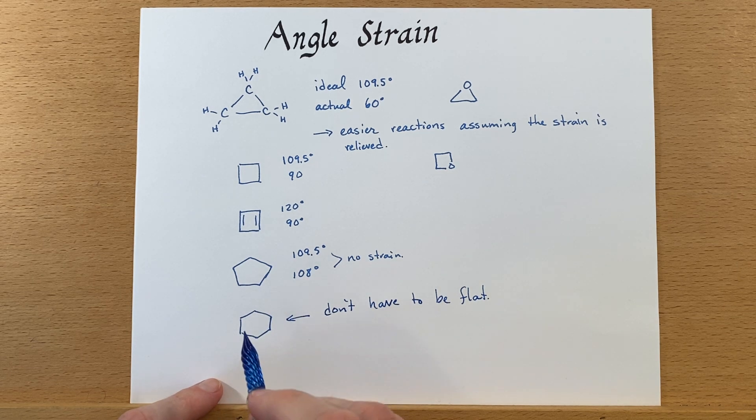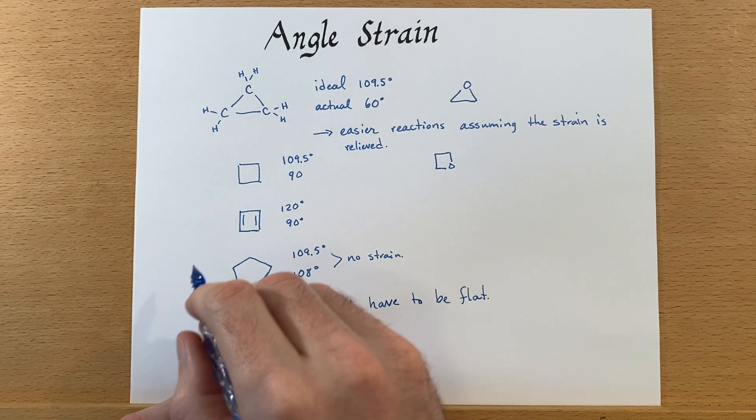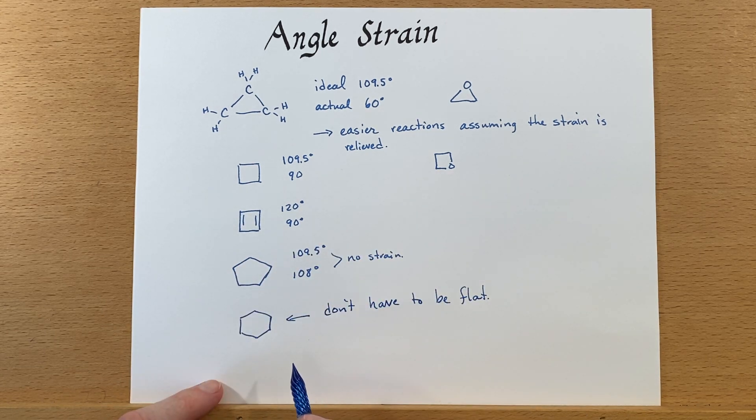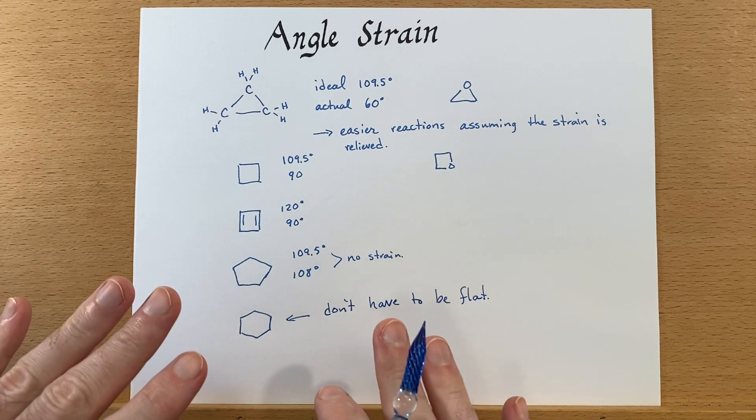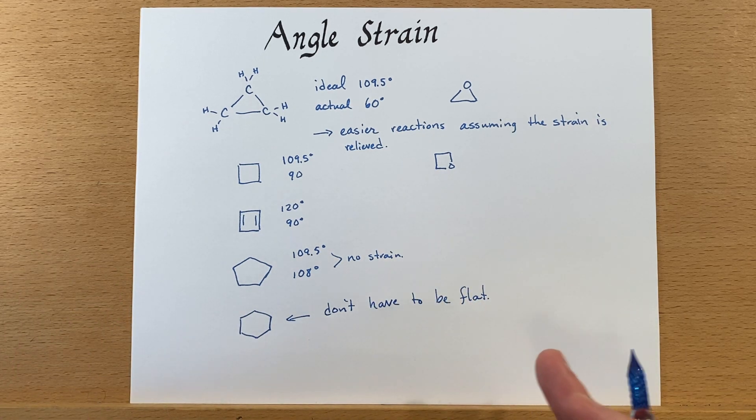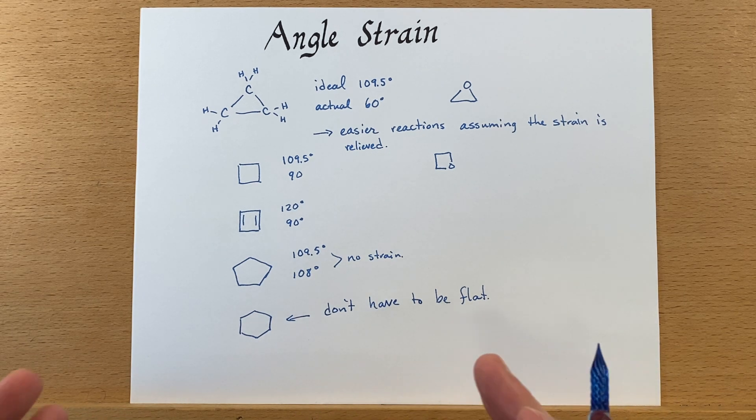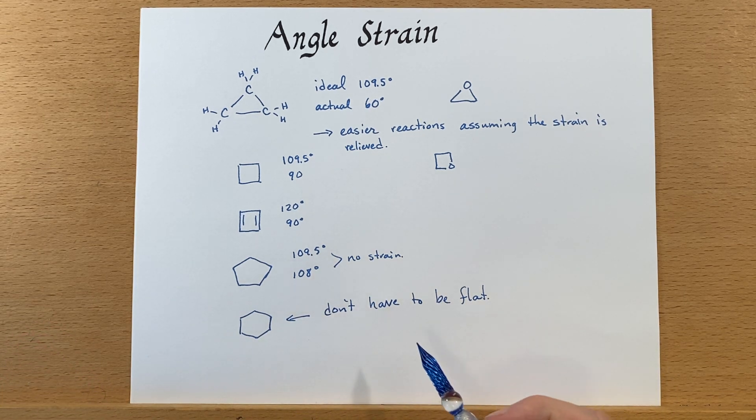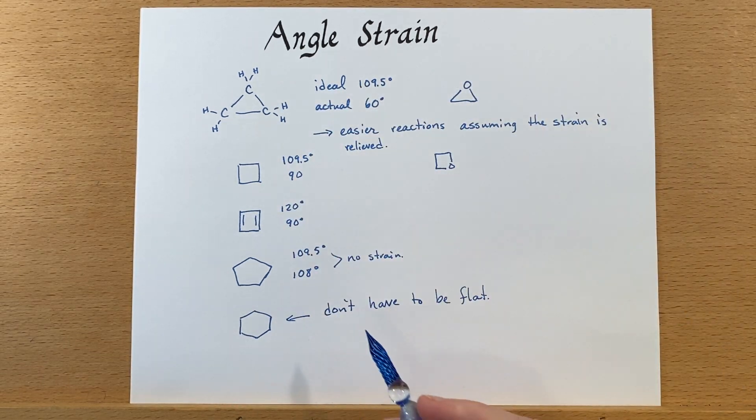So they can relieve the angle strain. You can make larger rings and also build other structures around them to force that part to be flat and then you would produce angle strain in that case. But that's less common than the ones that I noted up here.